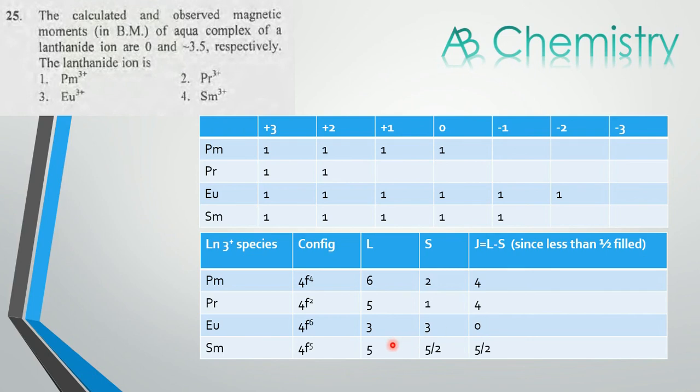For Samarium, here we can see 3+2+1-1 which will be giving 5, and S value, there are 5 spins so 5/2.